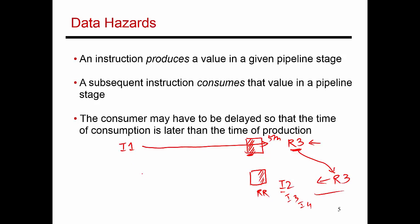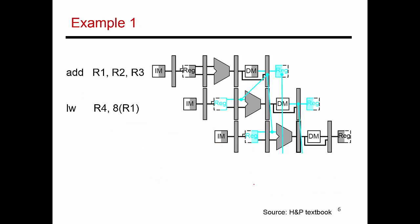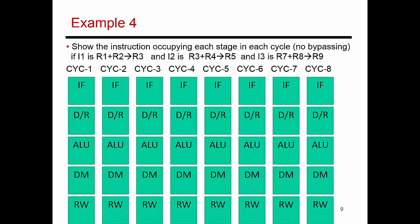Let's look at a concrete example. Instruction I1 takes values in registers R1 and R2, adds them, and puts the result in R3. Instruction I2 is the next instruction: it takes R3, adds it to R4, and puts the result in R5. Instruction I3 is completely independent of the first two — it takes R7 and R8, adds them, and puts the result in R9.